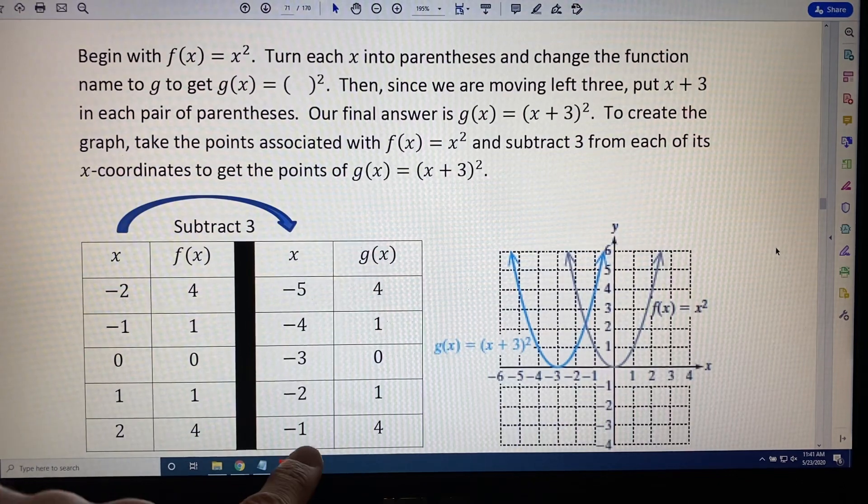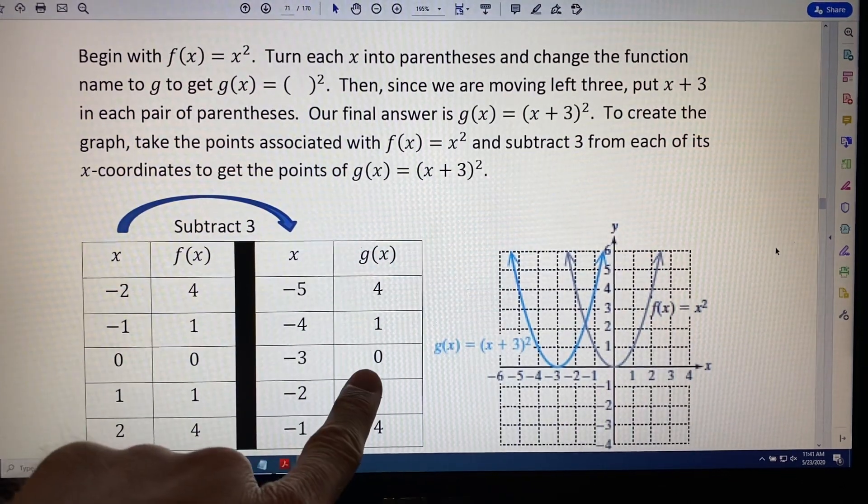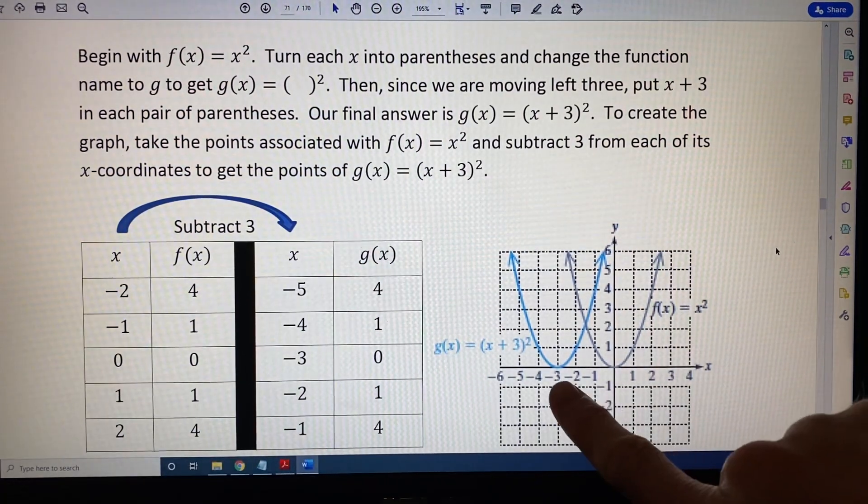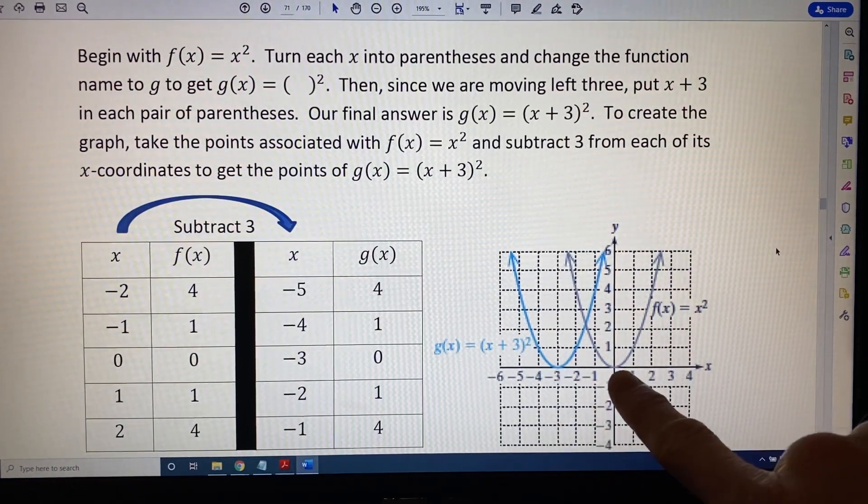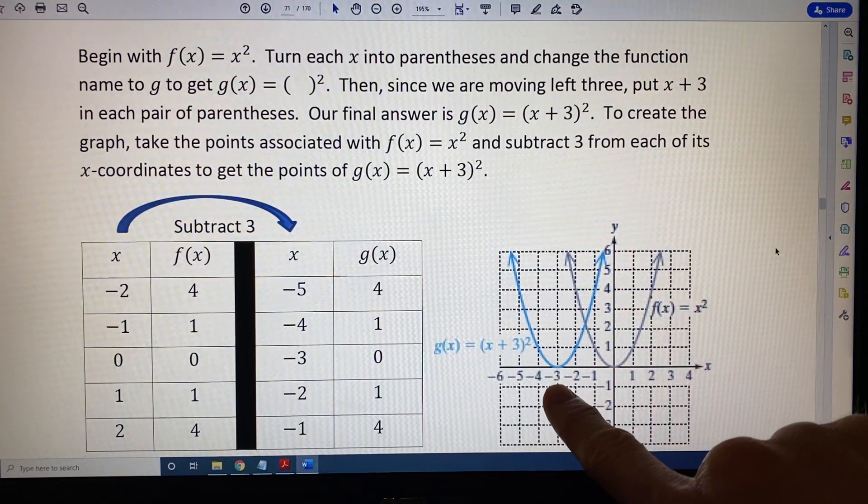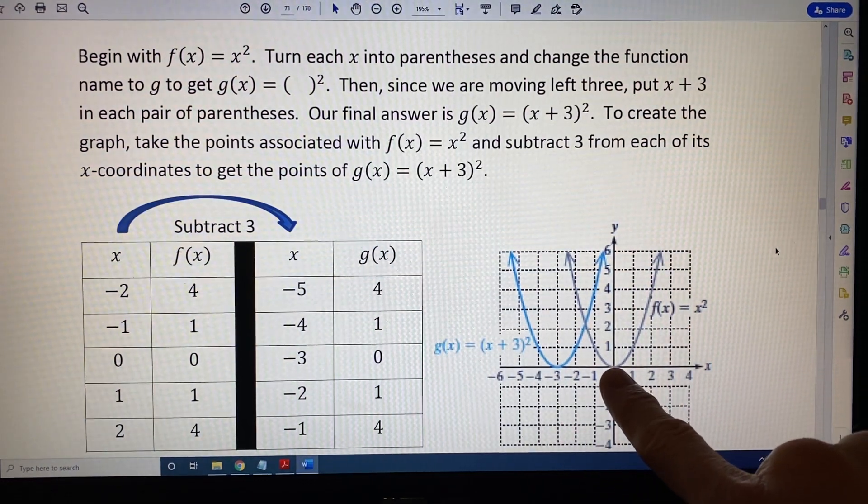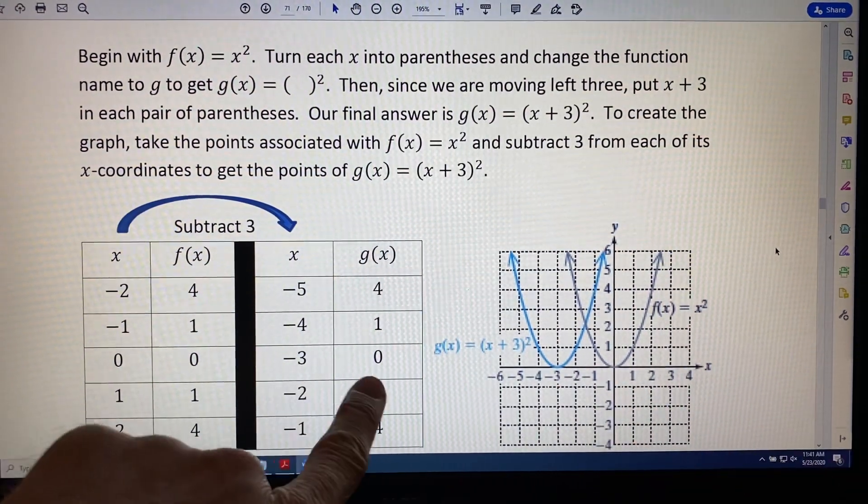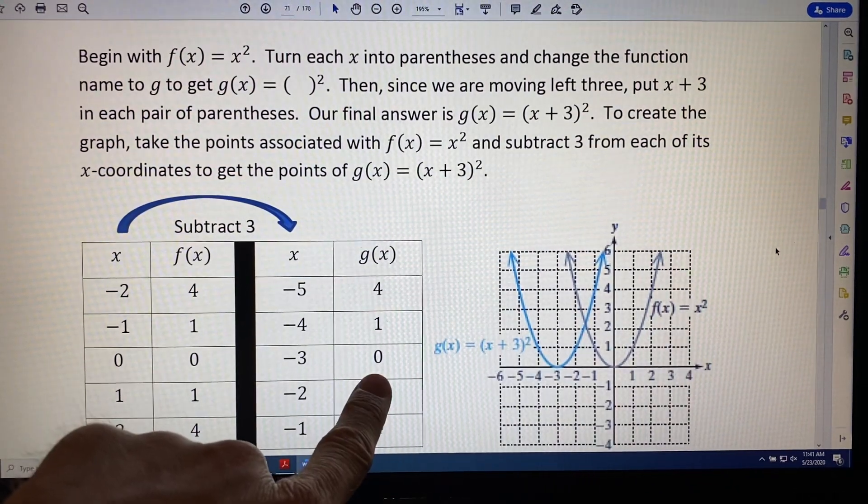We get ordered pairs like (-3, 0), which you can see matches perfectly on the graph. The gray graph moved three spots to the left, and therefore the x-intercept, which used to be at 0, is now at -3, and we get the point (-3, 0).